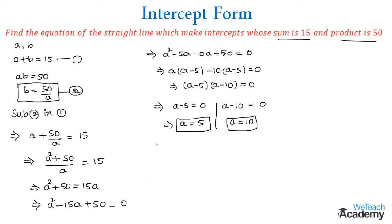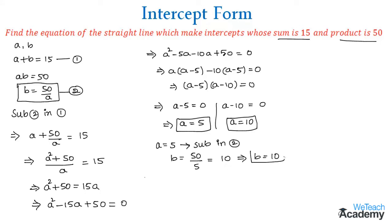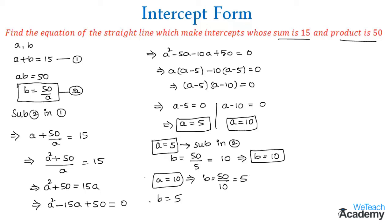If the value of a is 5, substituting into equation 2 gives b = 50/5 = 10. Similarly, if the value of a is 10, then b = 50/10 = 5.